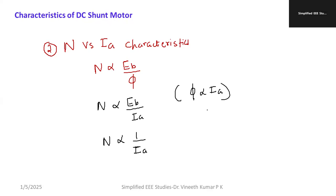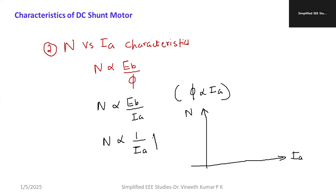Now you can draw the graph with speed in RPM on the y-axis and armature current in amperes on the x-axis. As the armature current increases, the speed comes down. The shape of the graph is hyperbolic — a hyperbola.